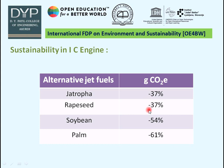For sustainability in IC engines, by using alternate jet fuels we can reduce the CO2 emission percentage. For jatropha, it is minus 37%; for rapeseed, it is minus 37%; for soybean, we reduce CO2 emission by 54%; and for palm, it is minus 61%.